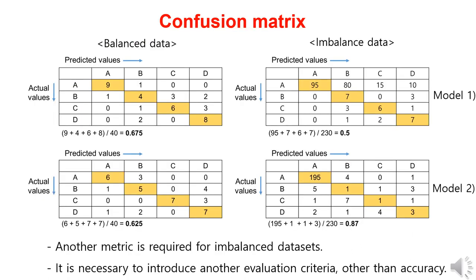This slide presents the confusion matrix for both the cases of balanced and imbalanced data. In the case where we have an equal number of instances for classes A, B, C, and D, the accuracy for the top model is 0.675, while the accuracy for the bottom model is 0.675. We can consider the top model with higher accuracy as a better model.